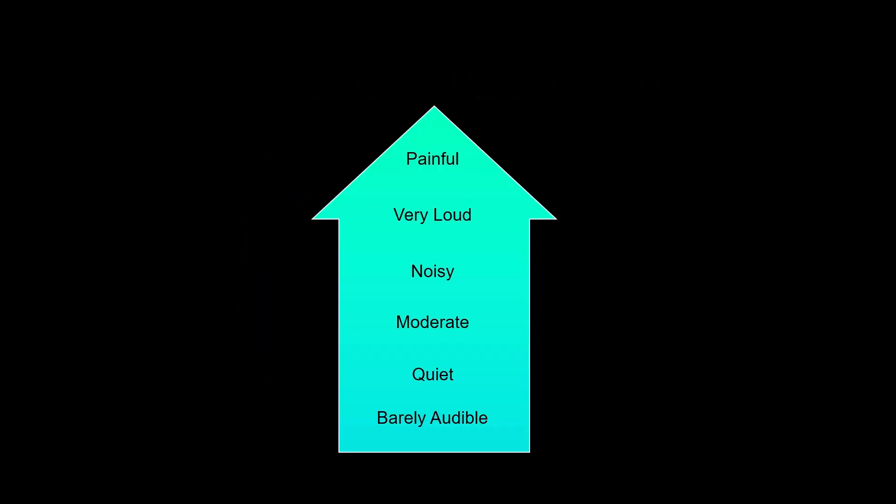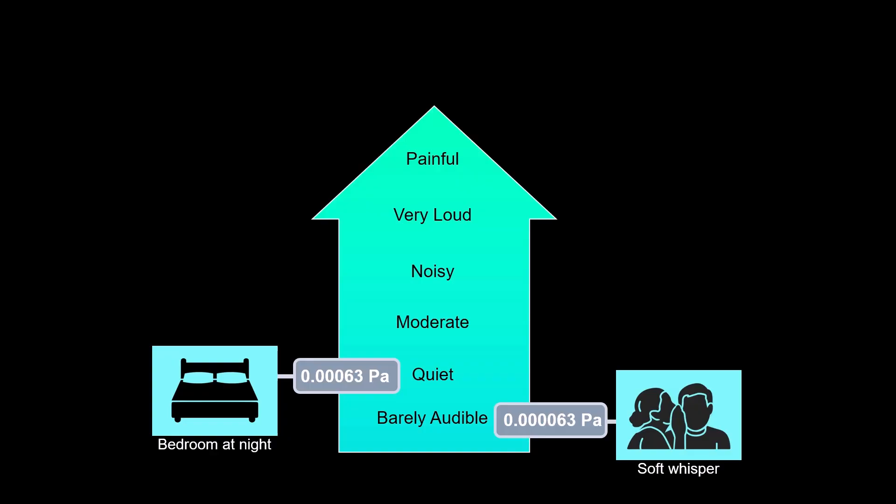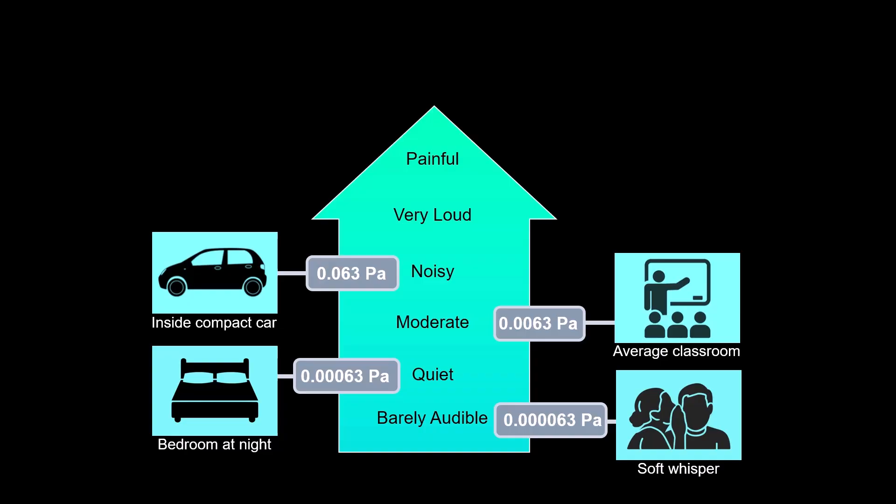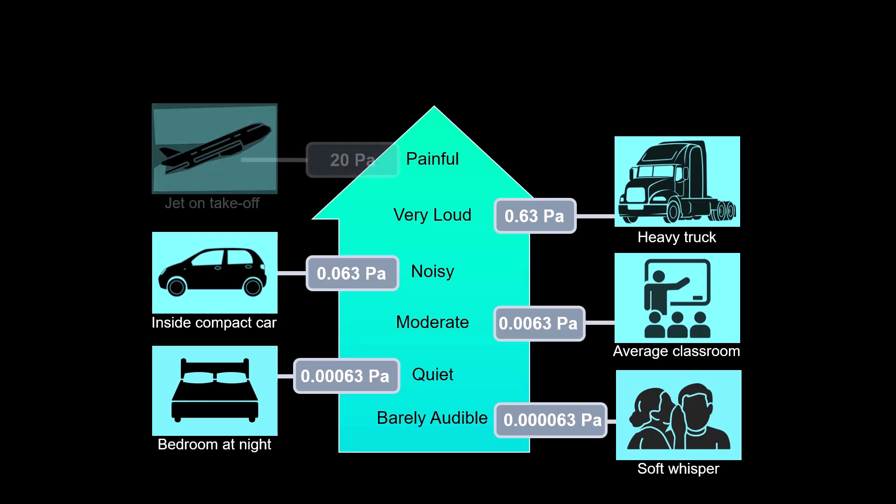So first up, I'll start with the quietest sound I can think of, a soft whisper. This has a pascal unit of 0.000063 pascals. Next, I'm going to go up to something quiet, maybe like a bedroom at night, and we've gone up another order of magnitude, about 0.0006 pascals. If I do a moderately noisy environment, like a classroom, maybe 0.006 pascals. Something noisy, like inside of a car, 0.06 pascals. Something very loud, like a heavy truck, 0.6 pascals. And then something painfully loud, like a jet taking off, is about 20 pascals.